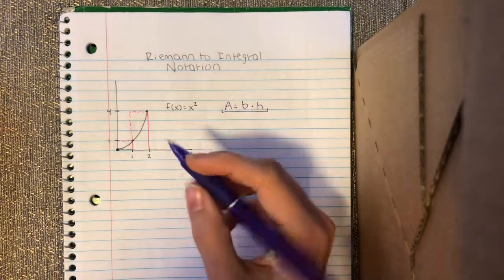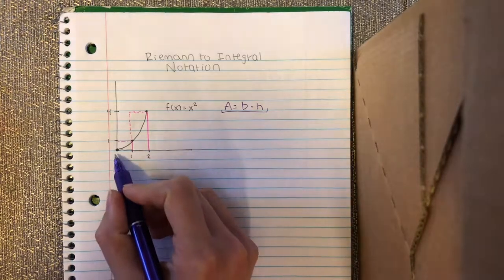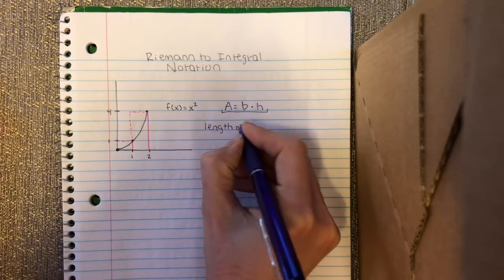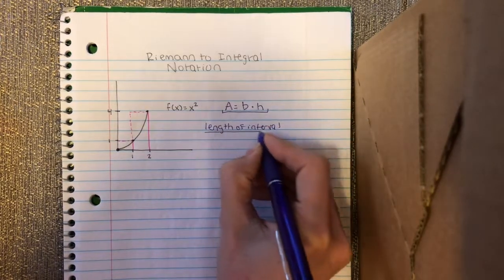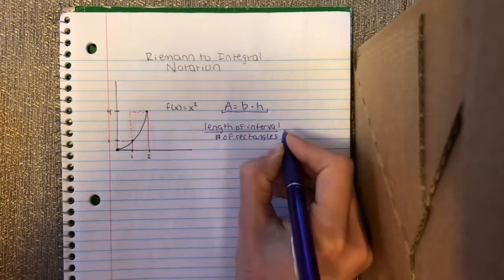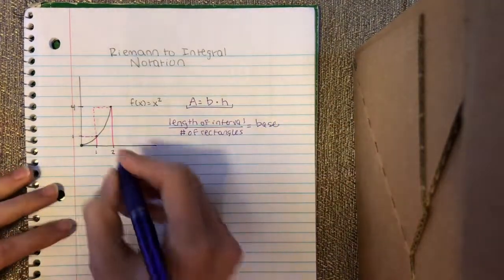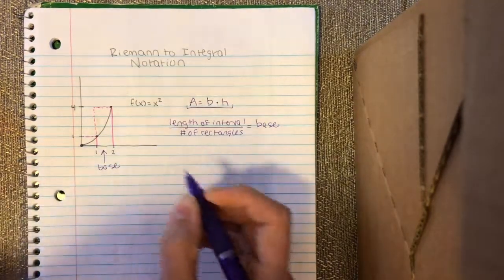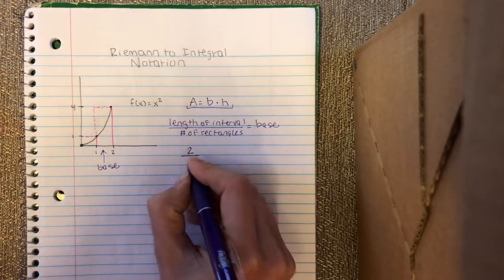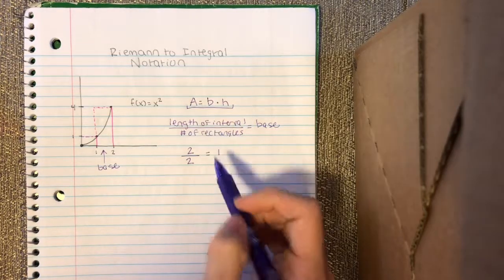The first question on your worksheet is, how do you represent the length of the base of each rectangle? In this case, we made two subintervals. So I took the length of interval and divided it by the number of rectangles. This was equal to the length of my base, and that's this part right here. In our very simple case, we have the length of the interval which was two, and we made two rectangles. So my base is equal to one. If I was plugging it into a formula, into my base right here, I would have base of one.